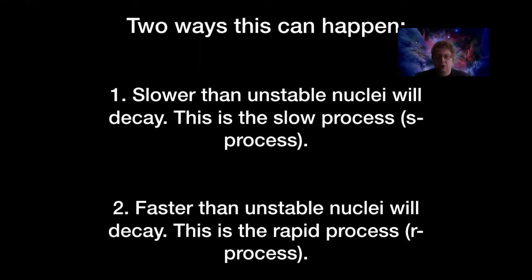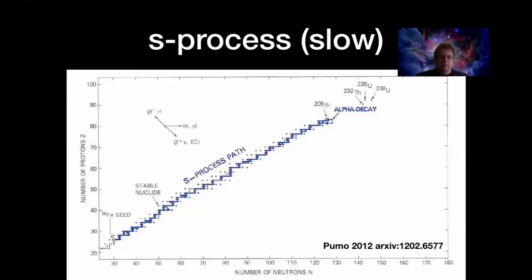There are a couple ways to add neutrons to nuclei, and the basic distinction is how fast it happens. You can add neutrons slowly enough that if the nucleus becomes unstable, it will decay immediately. Or you can add neutrons really fast — so fast that the nuclei don't have time to decay, and you end up with very neutron-rich nuclei. We call these the slow process, or s-process, and the rapid process, or r-process.